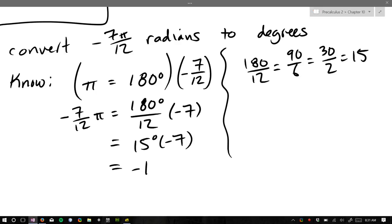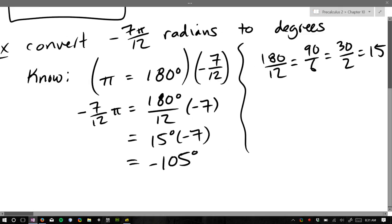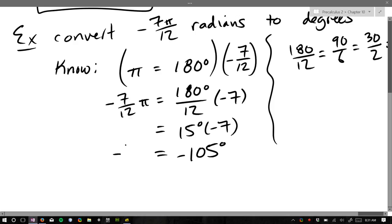All right, so 15, okay with that? All right, and then I said to multiply 15 times negative 7, which is 90 and another 15. So I think that's negative 105 degrees is negative 7 pi over 12.